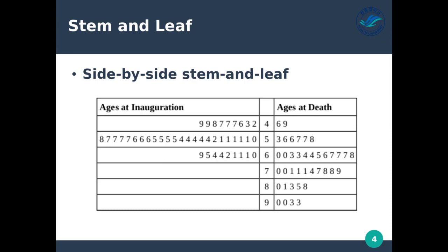Another example is stem and leaf graphs placed side by side. In this case we've measured essentially ages — we have the ages at inauguration for American presidents and the ages at death for American presidents. The unlabeled center column is our most significant digit, so 4, 5, 6, 7 would represent 40, 50, 60, 70, 80, 90 years old. We can see that the majority of presidents were inaugurated in their 50s — a very large number. And a very large number of presidents died in their 60s and 70s.